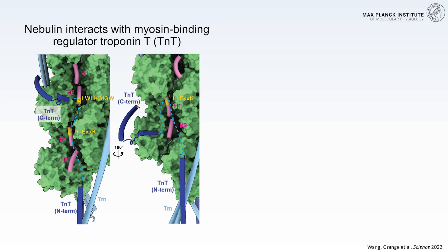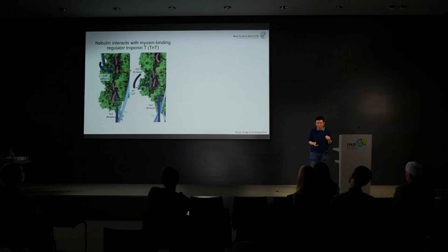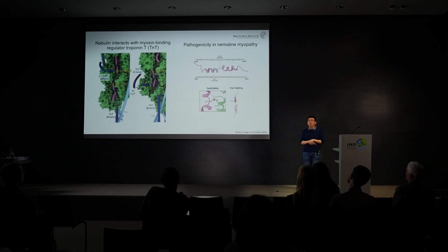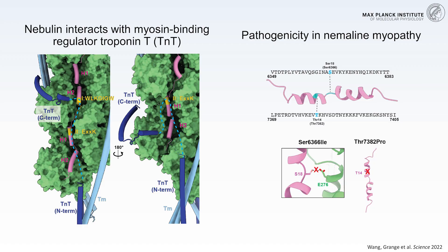By comparing our structure with the previous structure of another myosin-binding regulator protein called troponin, we found that one of the troponin components, troponin T, overlaps with where nebulin is located. This suggests that nebulin can interact with troponin T at multiple different sites, explaining how nebulin may regulate myosin binding without direct contact with myosin. With this structure, we can better understand the pathogenicity of nebulin gene mutations — for example, two founder mutations for nemaline myopathy correspond to disruption of either hydrogen bonding between nebulin and actin or disruption of the first helix in the nebulin structure.